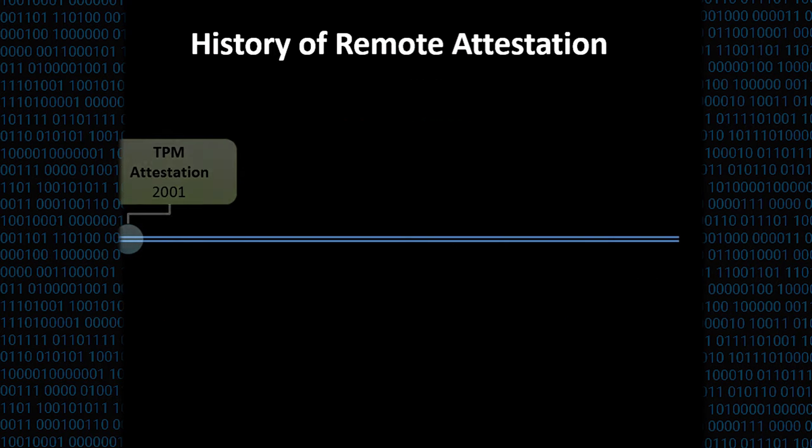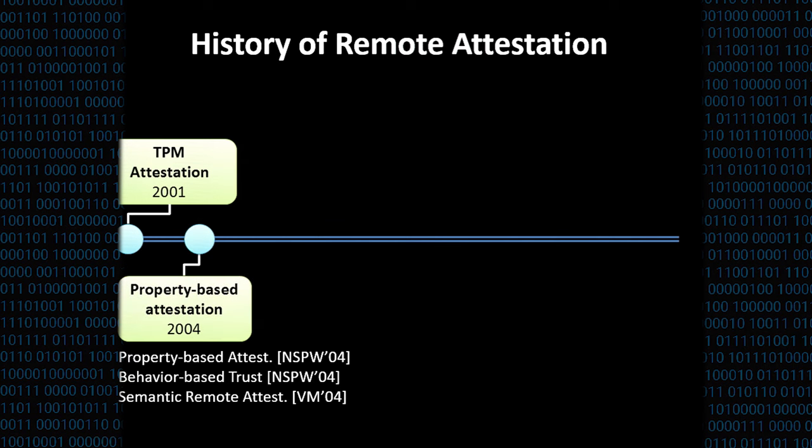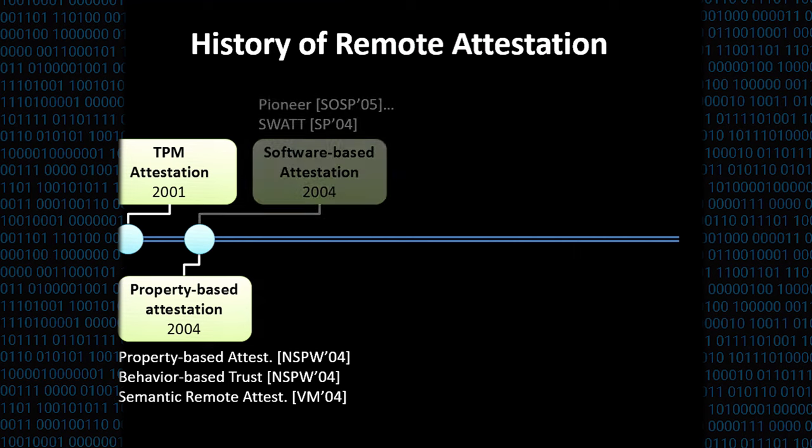Remote attestation actually has a long history that dates probably back to 2001 when the first TPM specification has been released. In 2004, several researchers introduced the notion of property-based attestation, meaning moving beyond simply hashing binaries but rather attesting real properties of the system. Another research direction is software-based attestation. Here, the motivation is to avoid any hardware changes and completely implement remote attestation in software, for instance by calculating a checksum over the memory contents. However, software-based attestation has very strong assumptions about the channel and about the optimalism of the algorithm.